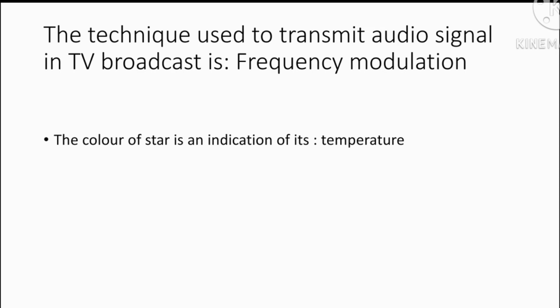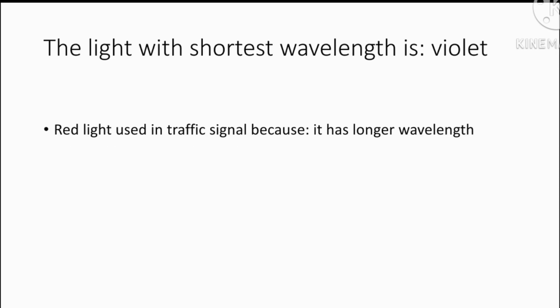Next is, the light with shortest wavelength is violet. Violet has the shortest wavelength, around 380 nanometer. The smaller wavelength of light, the more it will be scattered in the atmosphere particles.